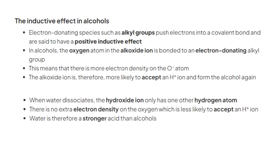The inductive effect in alcohols. Electron-donating species such as alkyl groups push electrons into a covalent bond and are said to have a positive inductive effect. In alcohols, the oxygen atom in the alkoxide ion is bonded to an electron-donating alkyl group. This means that there is more electron density on the O⁻ atom. The alkoxide ion is therefore more likely to accept an H⁺ ion and form the alcohol again. When water dissociates, the hydroxide ion only has one other hydrogen atom. There is no extra electron density on the oxygen, which is less likely to accept an H⁺ ion. Water is therefore a stronger acid than alcohols.